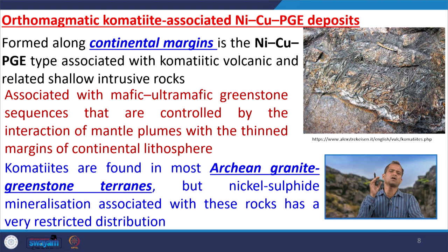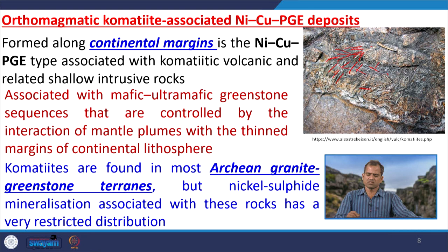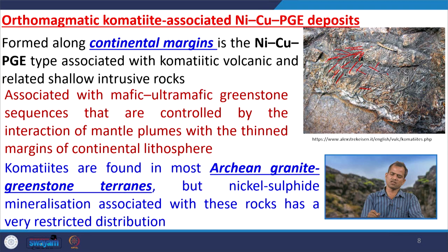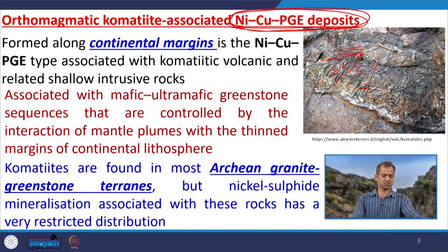Komatiite magma shows a distinctive spinifex texture visible in field photographs — the lines are olivine crystals arranged in a broom-type pattern. This broom-type arrangement of olivine crystals is typical of komatiite magma and is found in Archean greenstone belts. The magma generated during Archean times contained nickel, copper, and platinum group element deposits, but only at specific regions with specific magma compositions holding these Ni-Cu-PGE deposits.